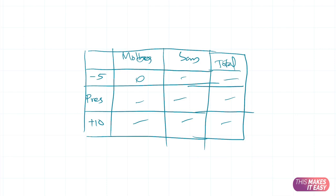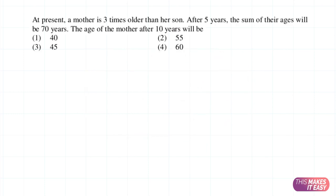So let's look at some examples from the previous years and solve them to see how the technique works and how easy it is to answer this type of questions. The question says that at present a mother is three times older than her son. After five years, the sum of their ages will be 70 years. The age of the mother after 10 years will be? There are two people — mother and son — and three time periods: present, after five years, and after 10 years.